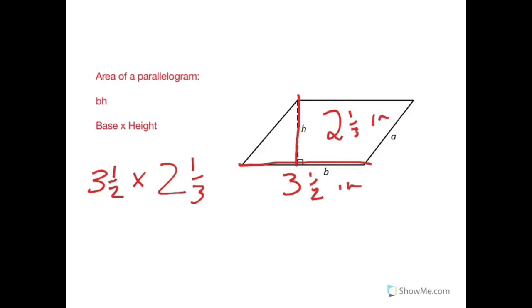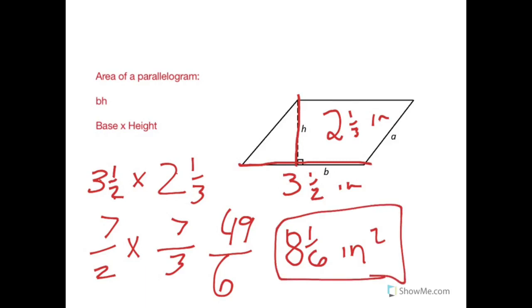Okay, so three and a half times two and one third. Okay, to make it a little easier on myself, I'm going to make these mixed numbers into improper fractions. Two times three is six, plus one is seven, so I have seven halves, times three times two is six, plus one is seven, times seven thirds. Okay, seven times seven is forty-nine. Two times three is six. Six goes into forty-nine eight times, which would be forty-eight, so there's one left over. Denominator stays the same. So I end up with eight and one-sixth inches squared for the area of this parallelogram.